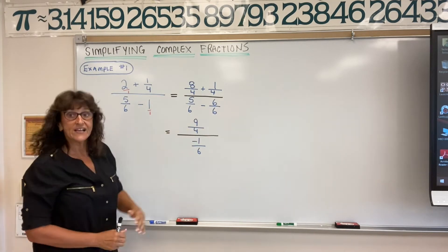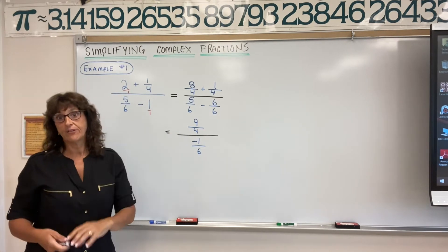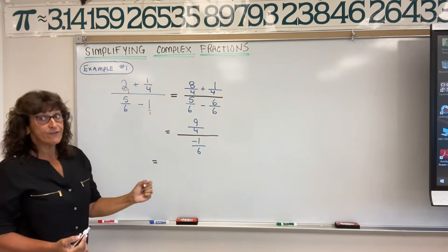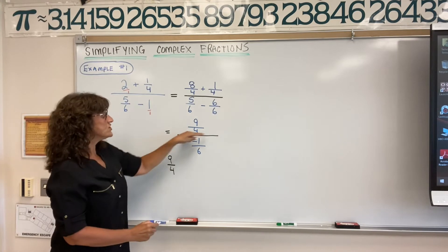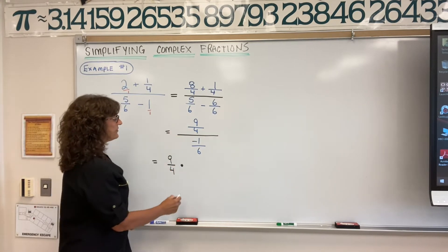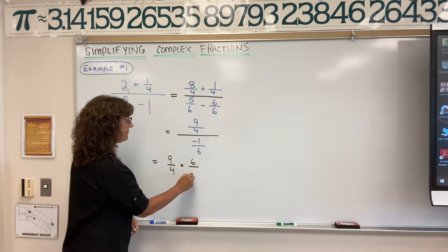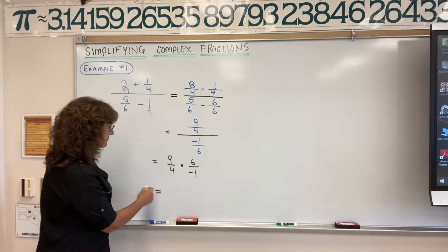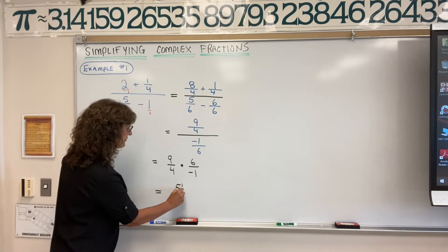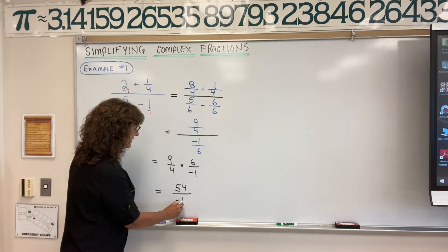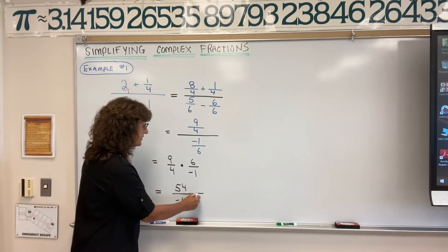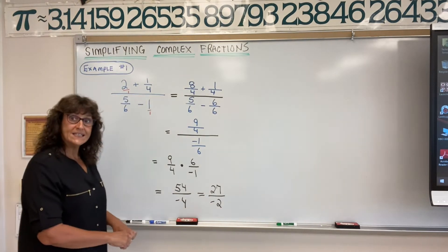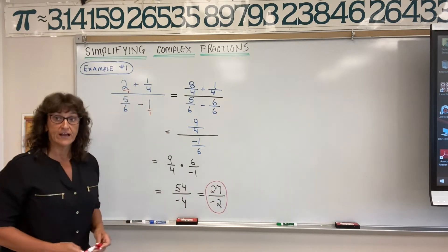Now we just have fraction over fraction. You can treat this as a division problem. How do you divide fractions? We actually change to a multiplication problem using our rules. So when you're dividing fractions, we take the numerator nine over four, change the division sign to multiplication, and flip the second fraction — multiply by the reciprocal. Some students say: keep it, switch it, flip it. Then multiply fractions: nine times six is fifty-four, four times negative one is negative four. So fifty-four over negative four reduces — two goes into fifty-four twenty-seven times, two goes into negative four negative two times — giving negative twenty-seven halves. That's what this complex fraction equals.